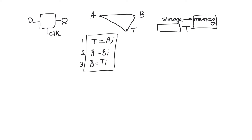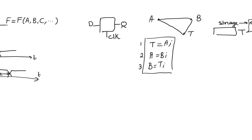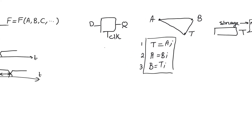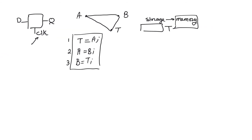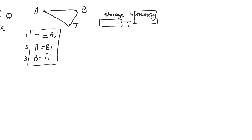A sequential element will, by necessity, have memory — because this is what allows us to perform a sequence, storing intermediate results. And having memory, by necessity, suggests that we have a control signal to distinguish between storing mode and transparent mode. This control signal is called the clock.